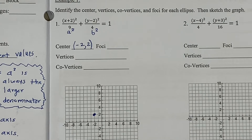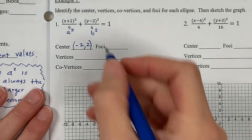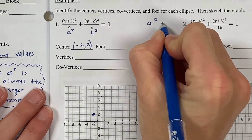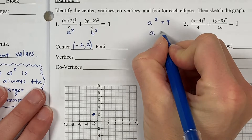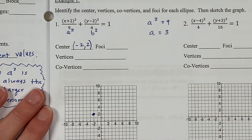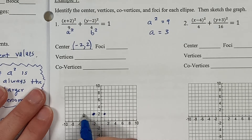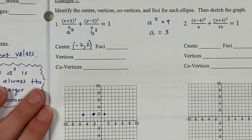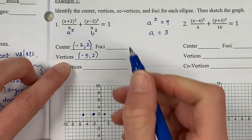The first thing I want to find are the vertices. The vertices are found using the a value — a is the distance from the center to one of the vertices. So I'm going to set a² = 9 and take the square root of both sides, giving a = 3. Since this is elongated parallel to the x-axis, I'm going to count three units to the right of the center and three units to the left of the center. The two points represent the vertices, so I have a vertex at (-5, 2) and a vertex at (1, 2).